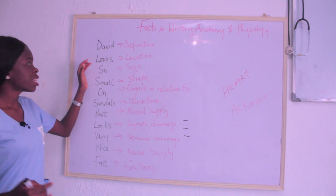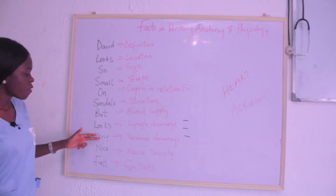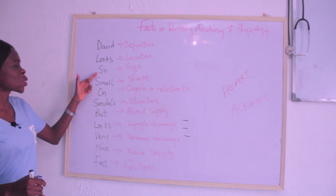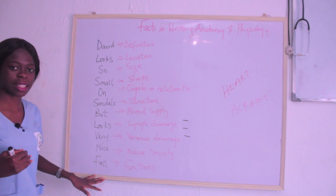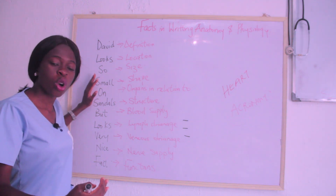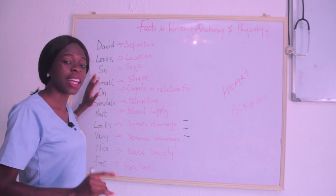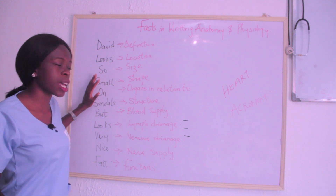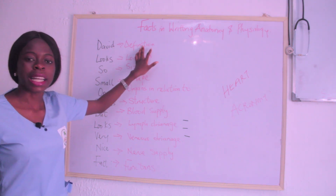We're going to be using this acronym: 'David Looks So Small On Sanders But Looks Very Nice Facts.' This acronym will guide us through when describing the anatomy and physiology of an organ, and we're going to be using the heart as an example. First of all, D stands for Defined — you tell us that the heart is a muscular organ of the cardiovascular system.